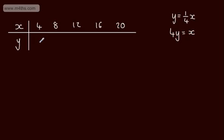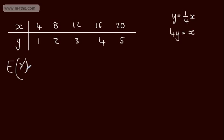If we apply that transformation, we get values of y equal to 1, 2, 3, 4, 5. So in terms of y, we now have 1 to n. We can use the expectation formula: the expected value of y is n plus 1 over 2, with n being 5, so E(y) equals 5 plus 1 over 2, which gives me 3.